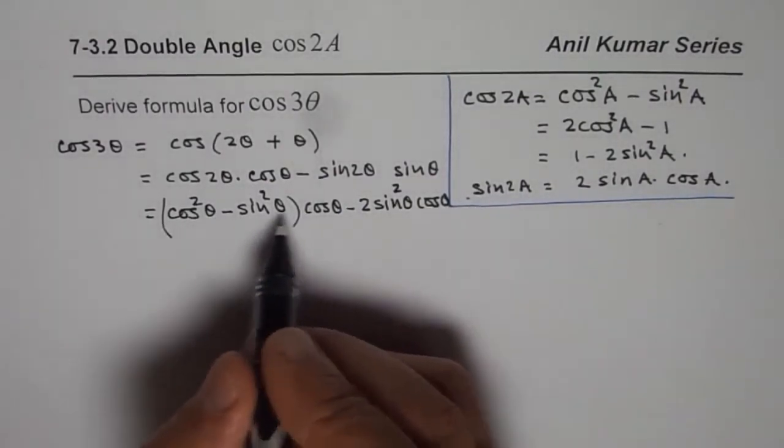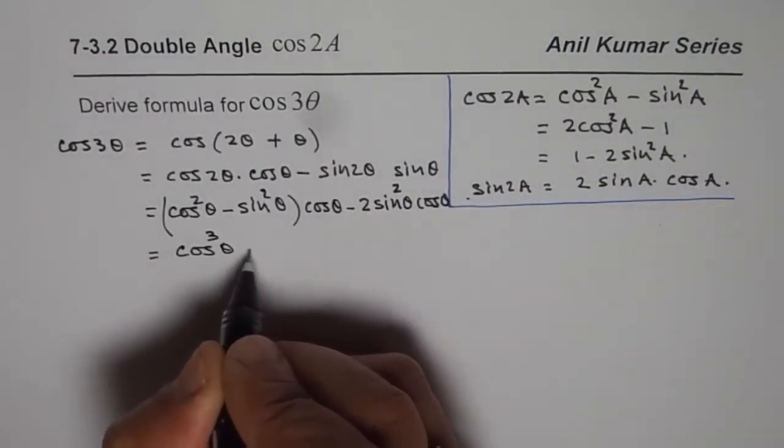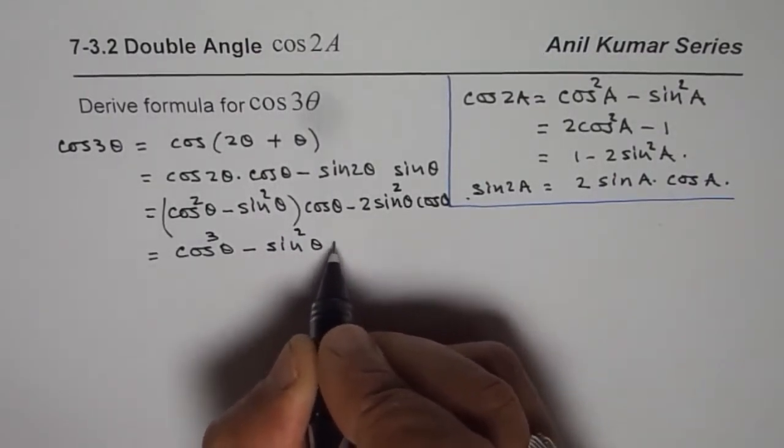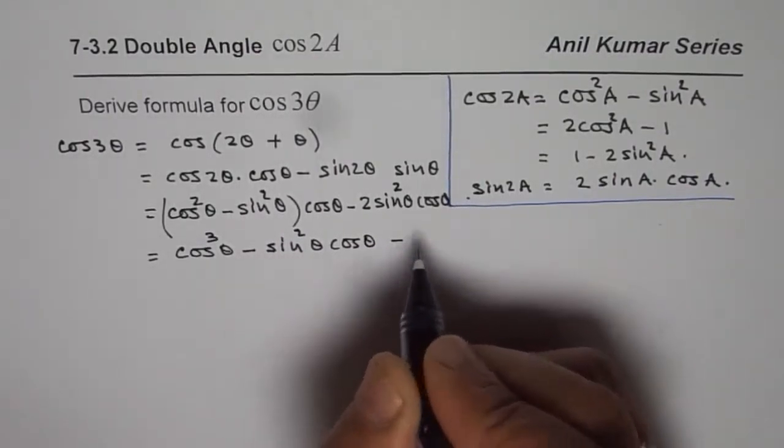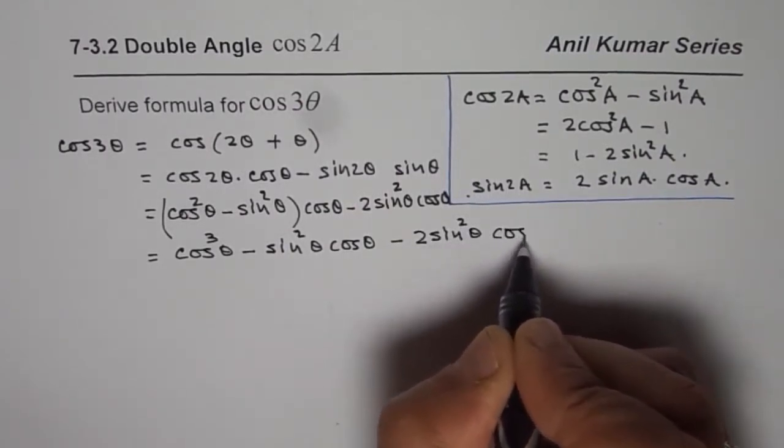Now we can actually open this bracket. So we get cos cube theta minus 2 sine square theta cos theta.